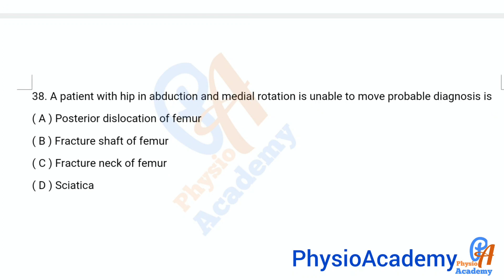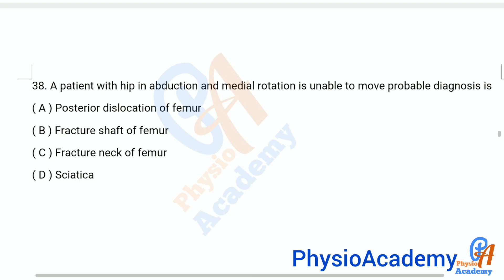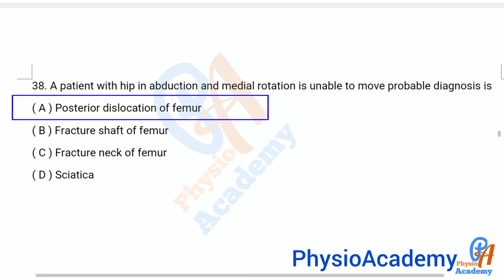Question number 38: A patient with hip in abduction and medial rotation is unable to move. The probable diagnosis is: option A posterior dislocation of femur, option B fracture shaft of femur, option C fracture neck of femur, option D sciatica. The correct answer is option A, posterior dislocation of femur.